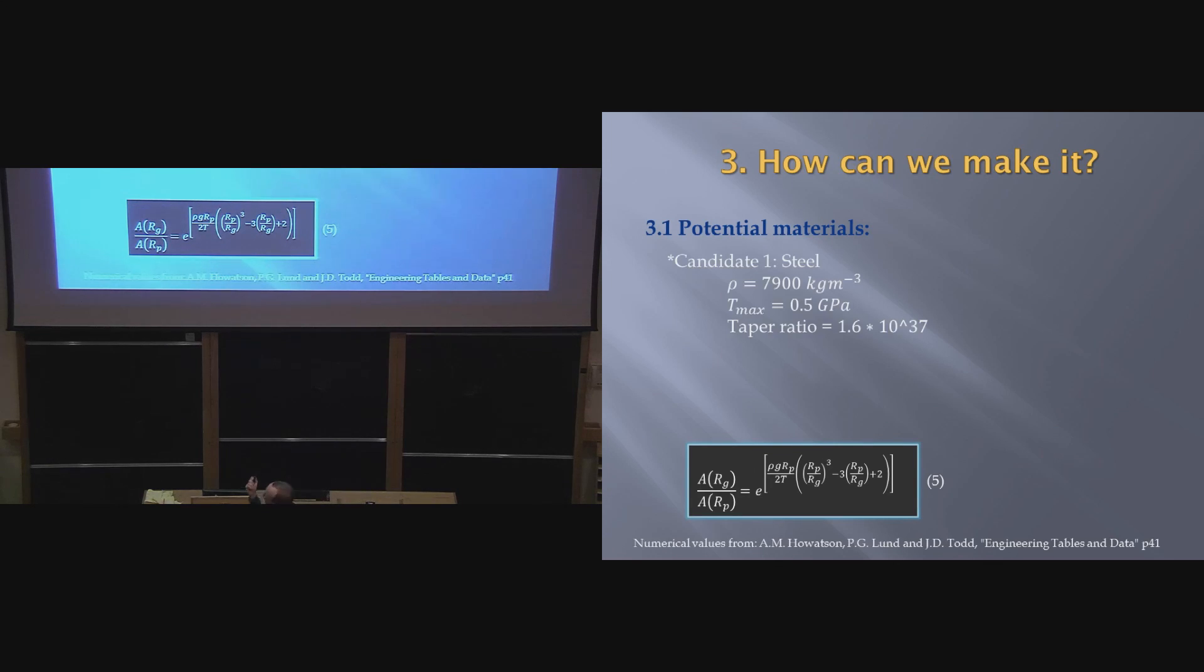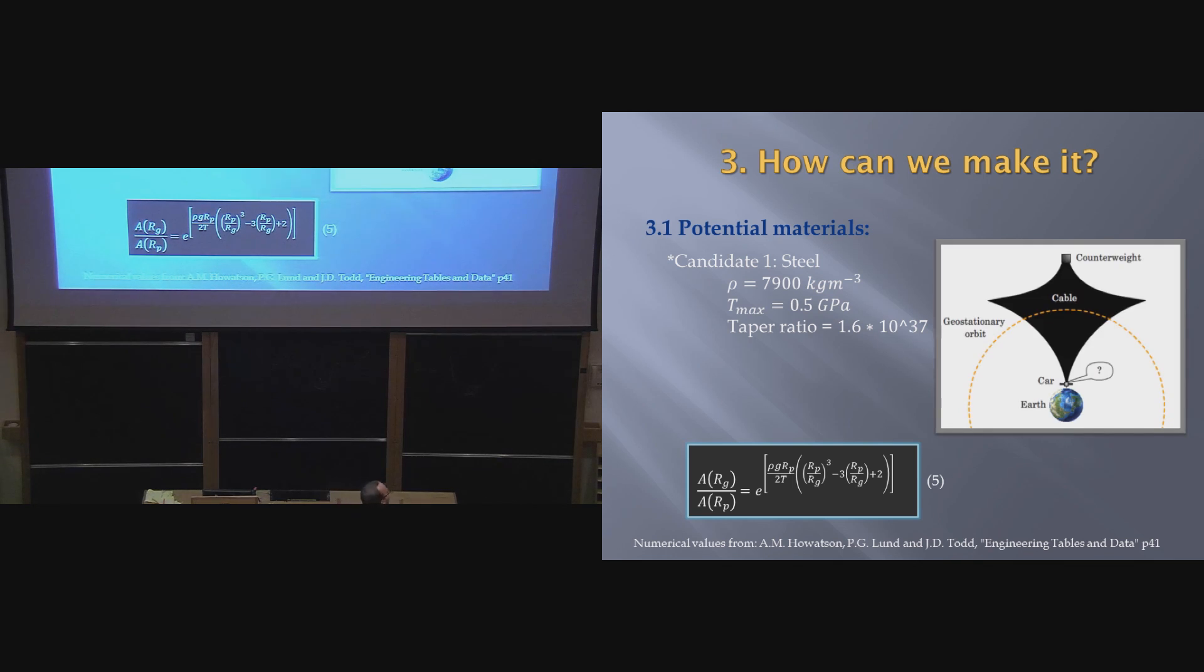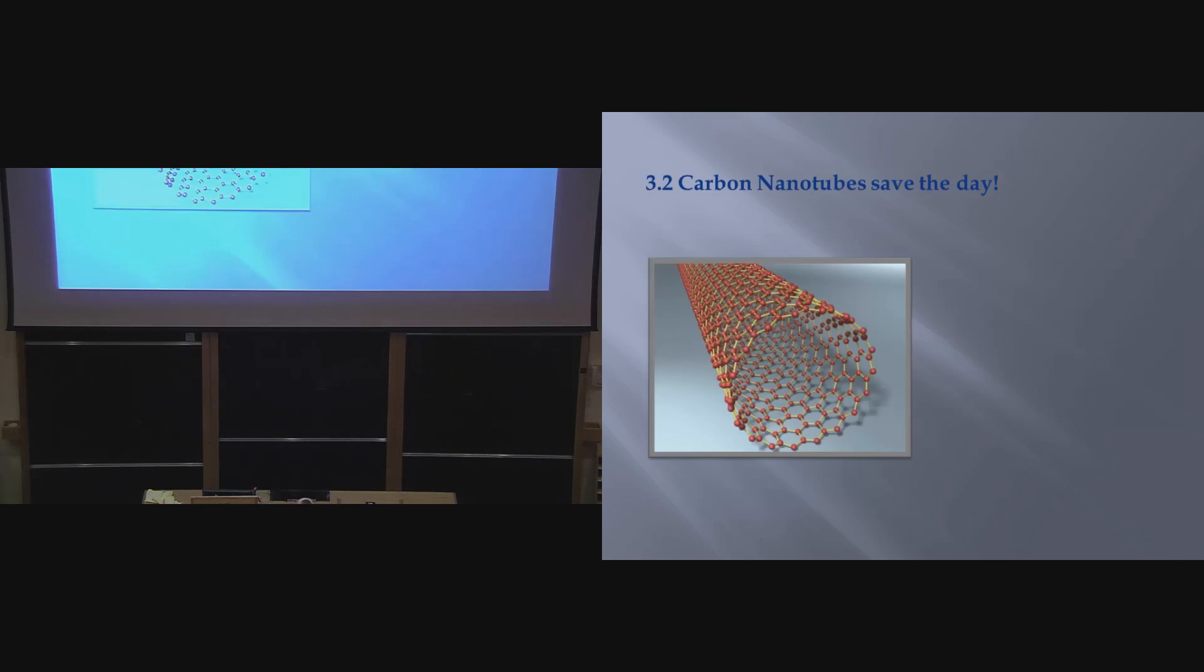Steel, here's its density, here's the maximum tension, and note I've included about a factor of 4 safety or so for steel, because we don't want a random gust of wind to hit our elevator and cause it to snap. And we get a taper ratio that will cause the elevator to look a bit like this. That's going to be a bit of a problem to try and climb that. So steel isn't particularly a good idea. I mean, you could step up to something slightly more sensible, say Kevlar, for example, and that knocks you down many orders of magnitude, but 10 to the power 8 still isn't going to work.